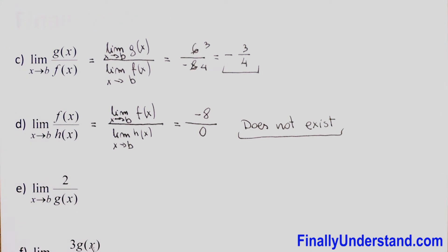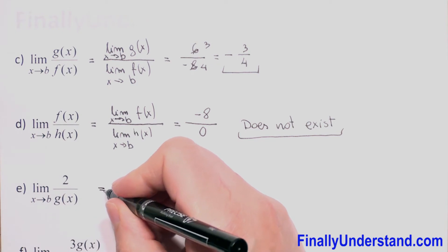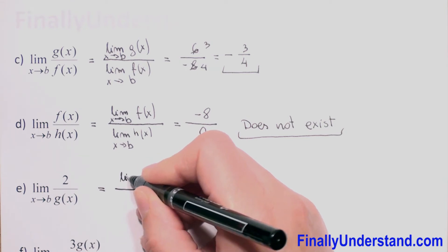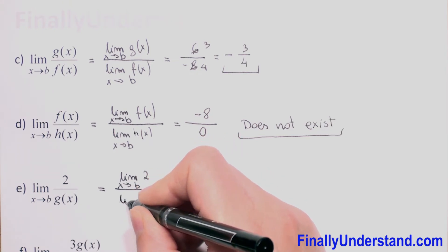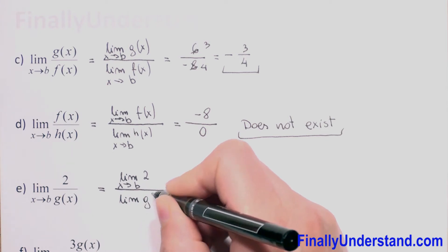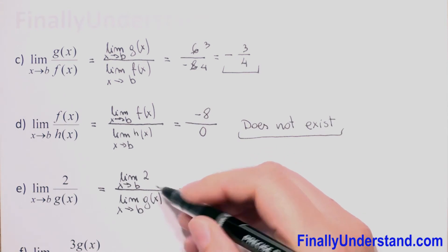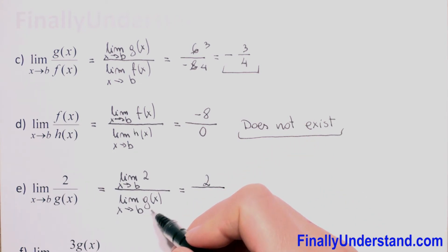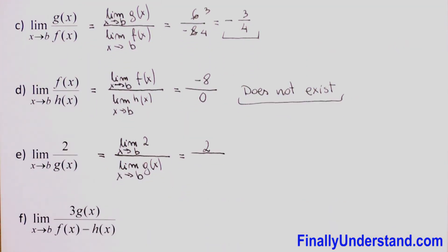Now we have to calculate the limit of 2 over g(x) as x approaches b. We can rewrite this from properties of limits as the limit of 2 as x approaches b over the limit of g(x) as x approaches b. The limit of a constant is the constant, so we have 2 over 6, which equals 1 over 3.